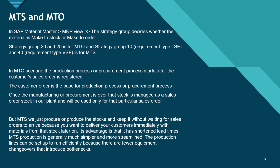In the material master, in the MRP view, the strategy group will decide whether the material is made to stock or made to order. There are certain values of strategy group. If you take 20 and 25, it is for MTO. If we take a strategy group of 10 or 40, it is for MTS. If we take 10, the requirement type will be LSF, and if we take 40, the requirement type would be VSF. I will show you in the SAP system what the strategy group is and how we set it in the material master.